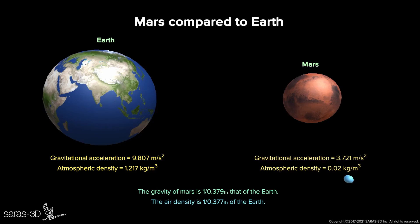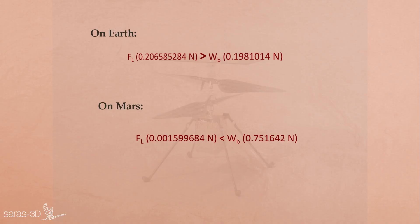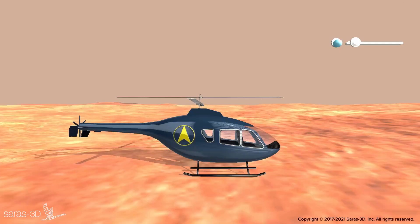Substituting these Mars values into the equation, we get a lift force of approximately 0.001599 newtons, while the weight of the helicopter on Mars is 0.07516 newtons. As we can see, the weight is more than the lift. Consequently, this helicopter will not be lifted on Mars.